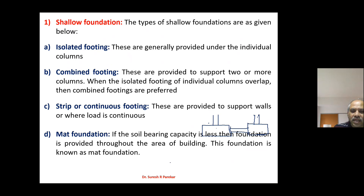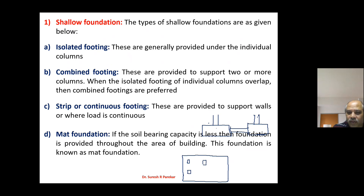The last type is mat foundation. When the bearing capacity of soil is very less and isolated footings of the columns are going to overlap with each other, we provide a slab-type footing common for all columns, known as mat foundation. In deep foundation, we mainly have pile foundation where depth is very large. Shallow foundations are in open conditions whereas deep foundations are in closed conditions.